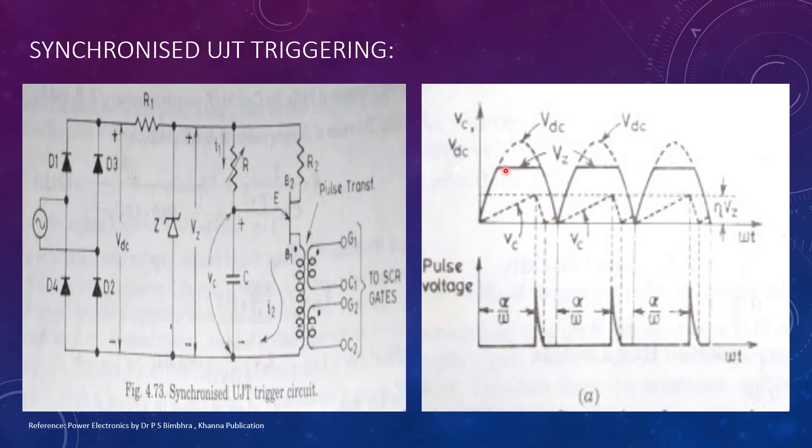This voltage VZ is applied to the charging RC circuit. Current I1 charges the capacitor C at a rate determined by the resistance R. The voltage across the capacitor is shown by VC.